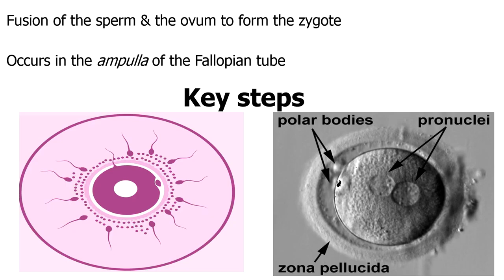But for now, fertilization in human beings still remains as the fusion of the sperm and the ovum to form the zygote. This occurs within the ampulla of the fallopian tube most of the time. The key steps in terms of formation of the zygote will start with the capacitation of the sperm.